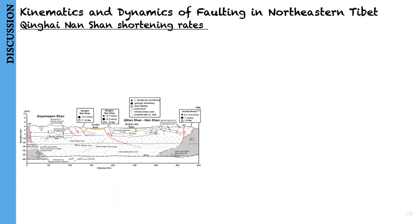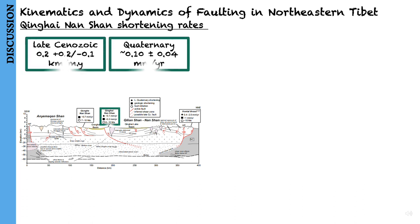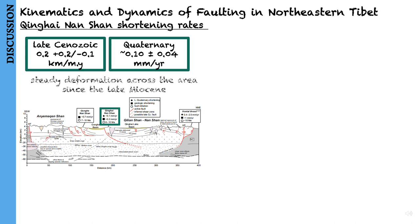In the last section before the conclusion, they discuss the kinematics and dynamics of faulting in northeastern Tibet. For the Qinghai-Nanshan, late Cenozoic shortening rates of 0.2 plus 0.2 minus 0.1 km per million year overlap with late Quaternary slip rates of around 0.1 plus or minus 0.04 mm per year, implying relatively steady deformation since the late Miocene. This validates recent estimates of late Miocene initiation age for the dextral strike-slip Elashan and Riyuexan faults, which assume steady-state deformation.